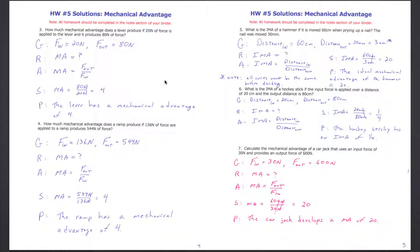Now we get to mechanical advantage problems. How much mechanical advantage does a lever produce if 20 Newtons of force is applied and it produces 80 Newtons of output force? Givens: force in = 20 Newtons, force out = 80 Newtons. Solving for MA: mechanical advantage equals force out divided by force in. MA = 80 Newtons ÷ 20 Newtons. Newtons cancel out — the lever gives a mechanical advantage of 4. You become four times stronger.